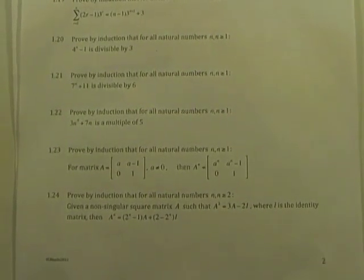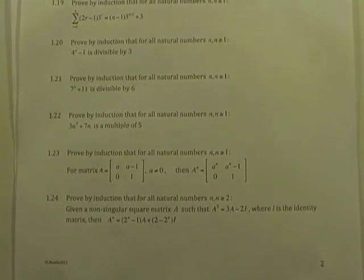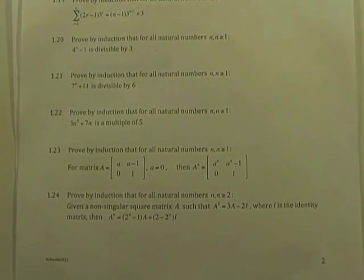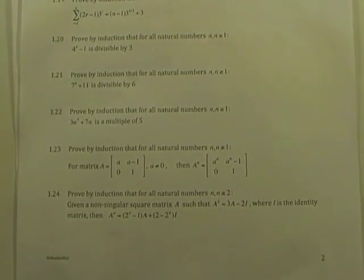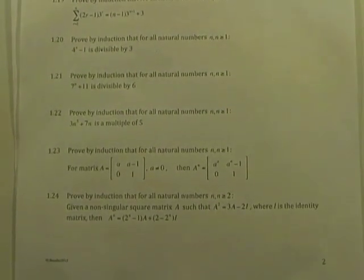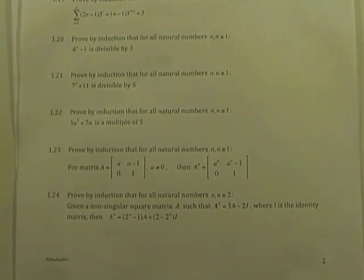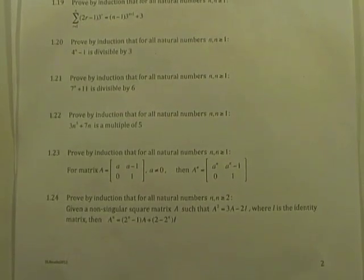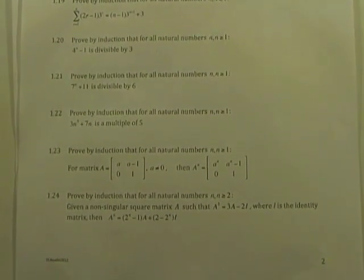Right, another question from the MathsCamp for Advanced Higher. Question 123, another proof by induction, this time involving matrices. Given a matrix A with elements A, A-1, 0 and 1, show that A to the N would be a matrix with elements A to the N, A to the N-1, 0 and 1.